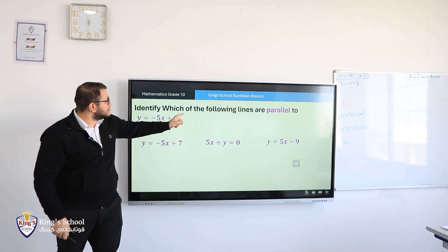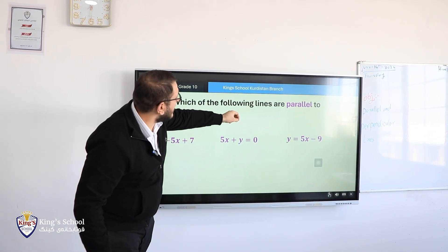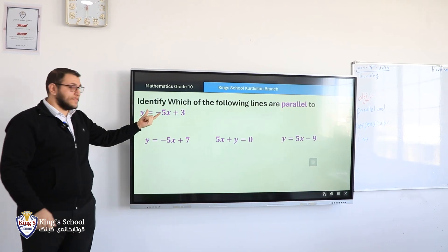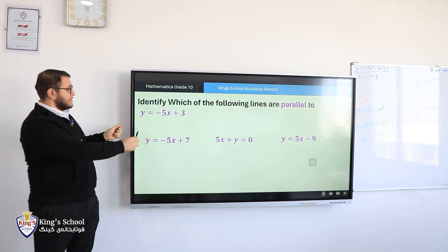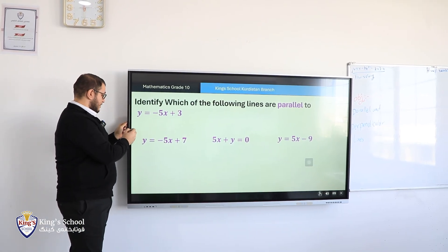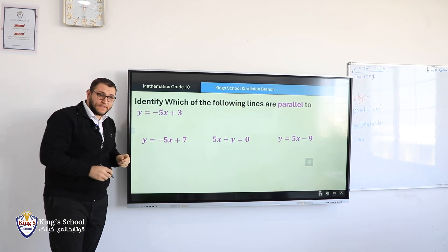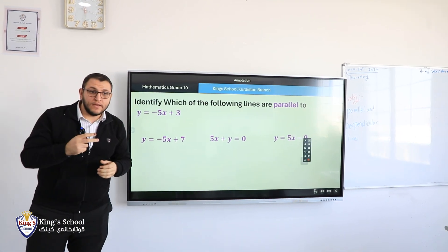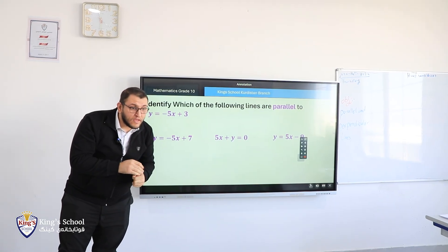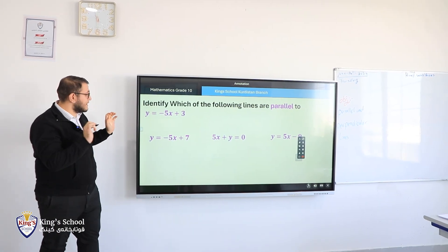We have identified which of the following lines are parallel to this line that I wrote here. Y equals negative 5x plus 3. Okay. We say that, how we know two lines are parallel? Sultan? If they have the same slope. Excellent.